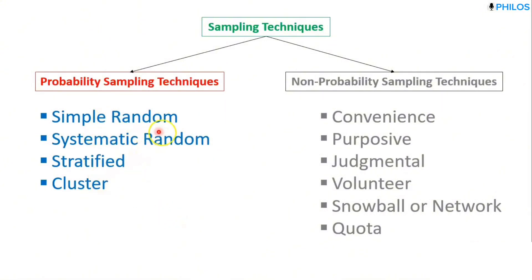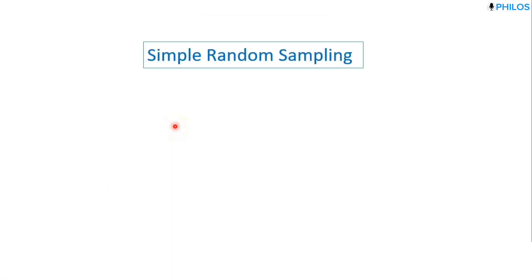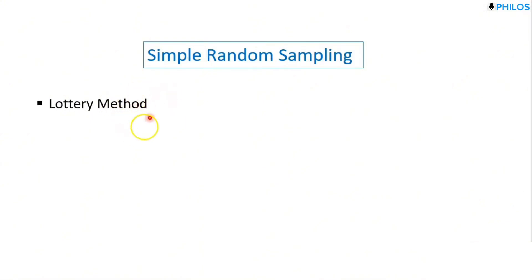For simple random sampling, each individual has an equal chance of being selected. However, it requires a complete list of the population. There are several methods of performing simple random sampling, and one of them is the lottery method.